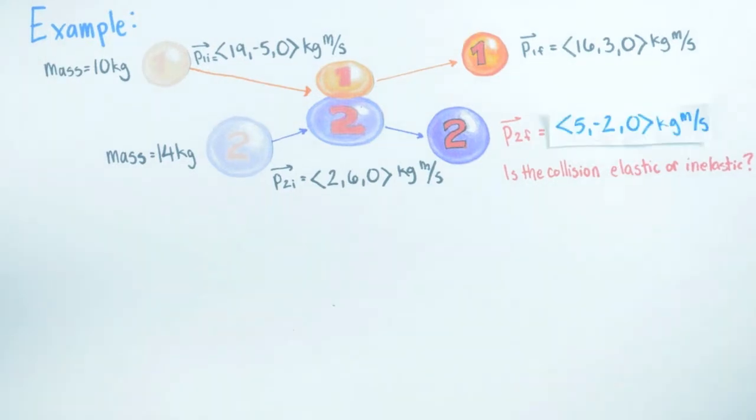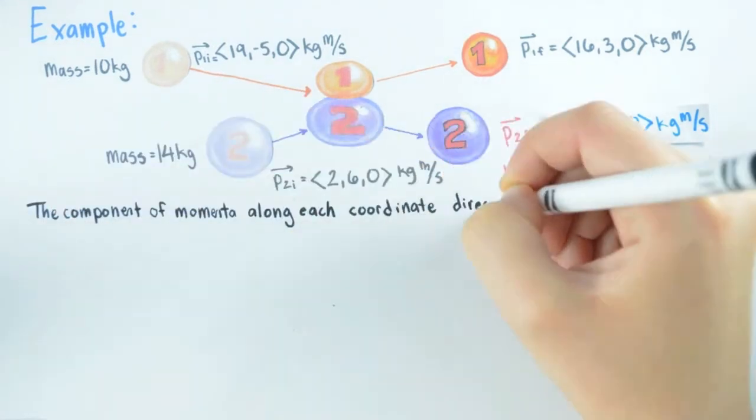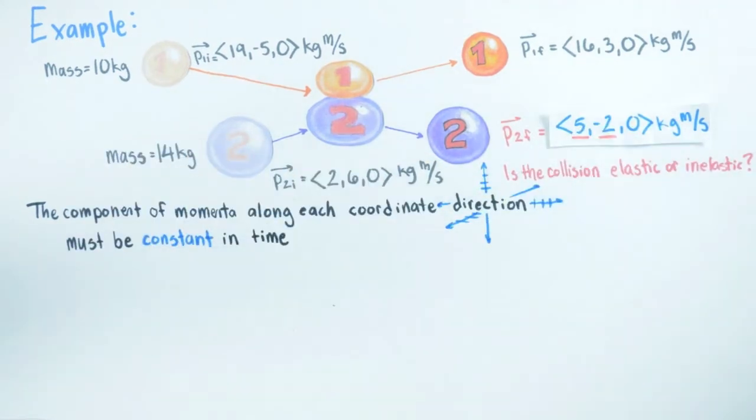Notice here that since we have two spatial directions where there are non-zero components of momentum, then the statement that the system momentum vector is constant in time means that the component of momentum along each coordinate direction must be constant in time. In a Cartesian coordinate system, this means each coordinate direction is an independent expression of this.